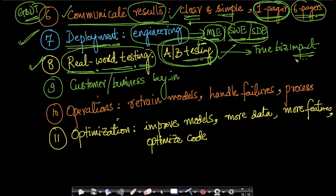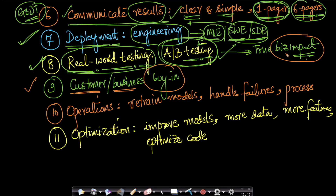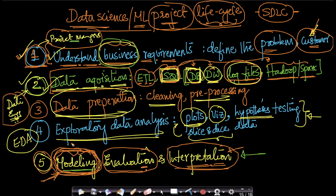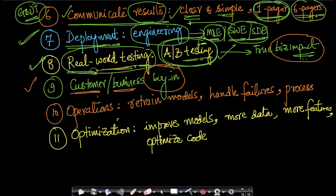At the end of A/B testing you measure the true business impact of all the effort you've put in. You then go back to the customer or business unit, convince them with all the experimental data that your solution is good for them. At the end of the day the business unit or customer needs to be thoroughly convinced that the solution you built adds business value and impact for them and their customers.